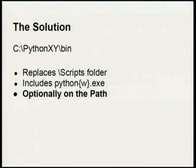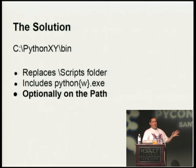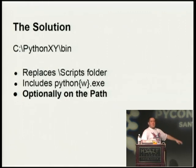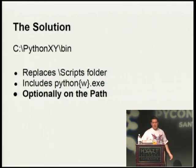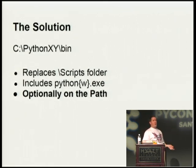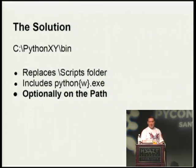One of the solutions — I just had lunch with Martin the other day — is that there will be a CPython XY bin folder. The scripts folder is full of effectively binaries, so Python.exe is going to go in there. The installer will have the option to add this to the path, which makes it much easier for getting started. I think a lot of people will like that.